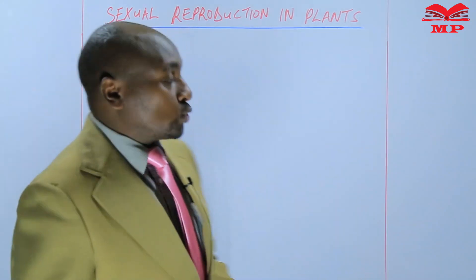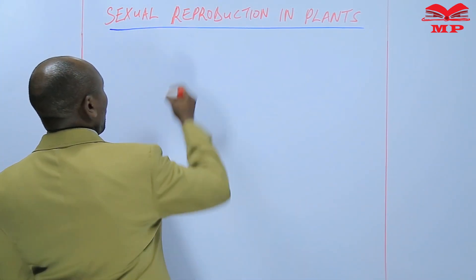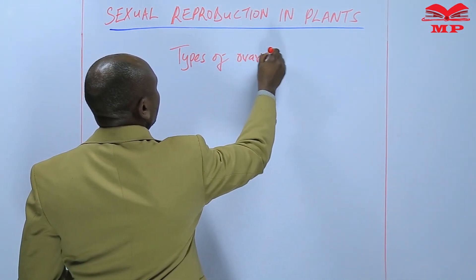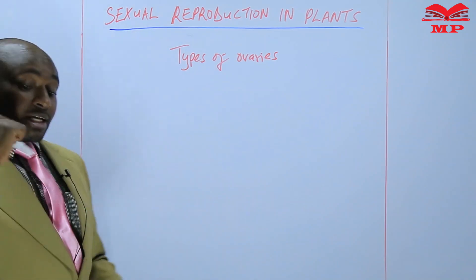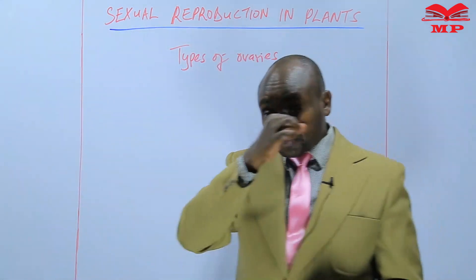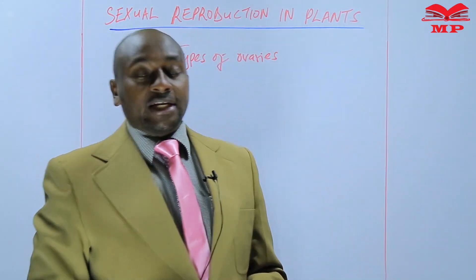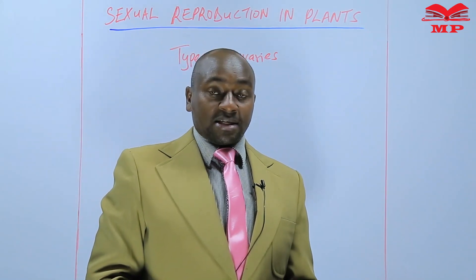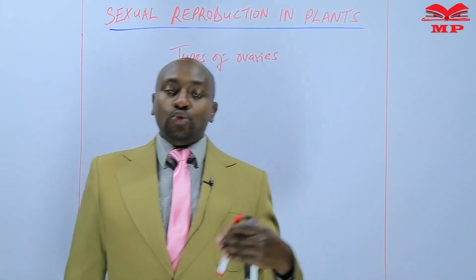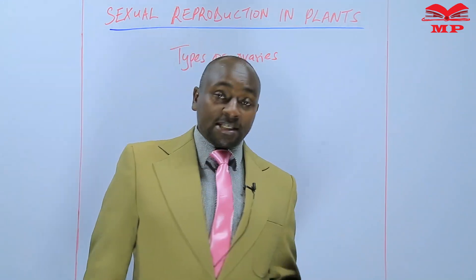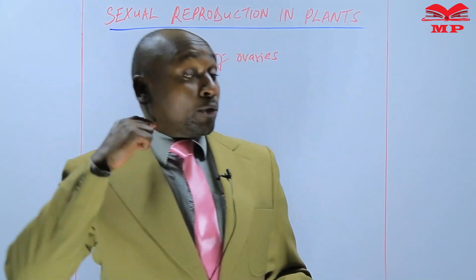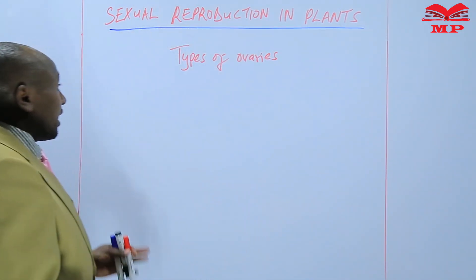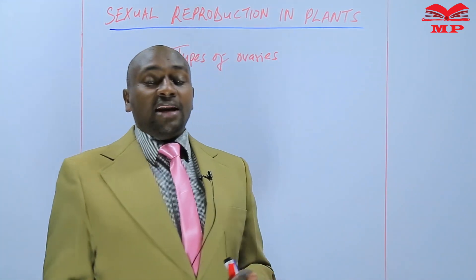So today I want us to look at types of ovaries. We're going to study the types of ovaries in a flower. Basically, we know that the ovaries are the ones that bear the female gametes, and those female gametes are the ones that will be later used for fertilization. It is important to understand the types of ovaries that we have, and these types are classified according to their position.